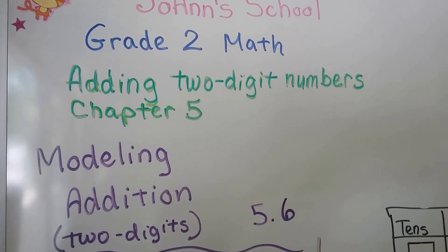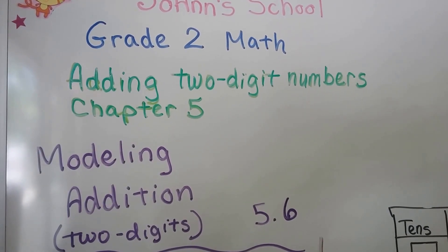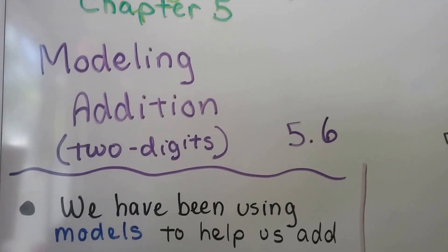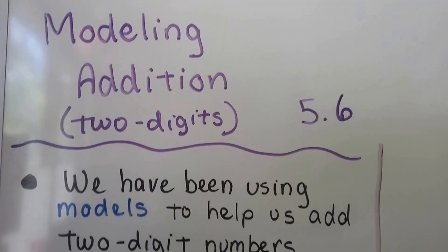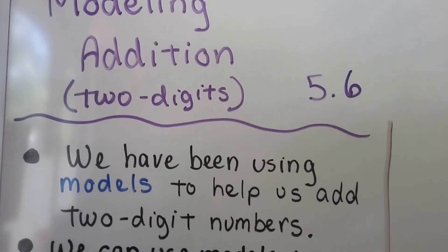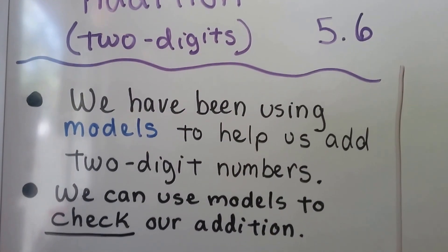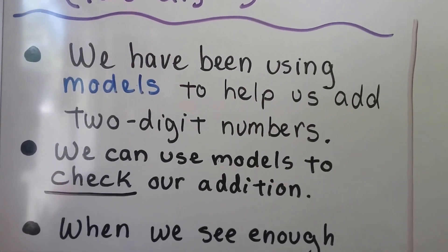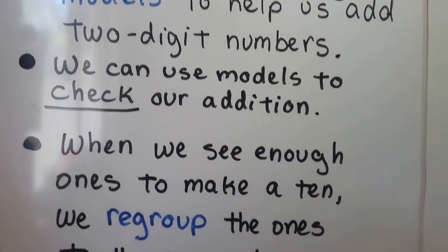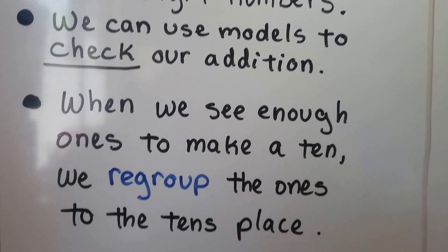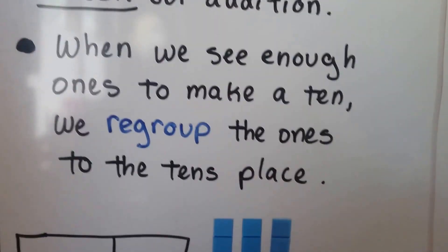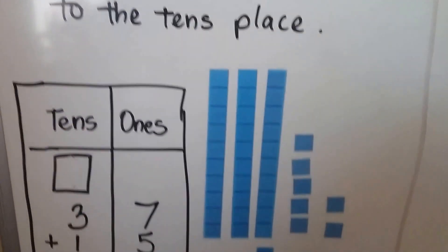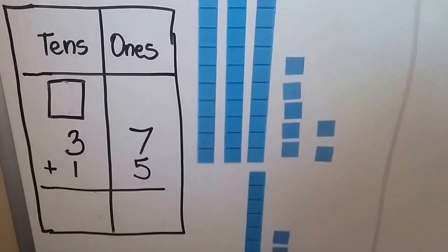We're going to be modeling addition in this video. This is 5.6. We've been using models to help us add two-digit numbers. We can use models to check our addition. When we see enough ones to make a 10, we regroup the ones to the tens place. Here's an example.